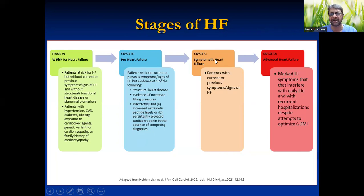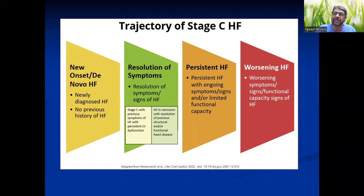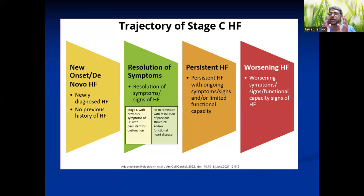C is symptomatic and D is end-stage. Within symptomatic patients, it's very important to determine: is your patient de novo — new onset heart failure? Or has the patient previously had symptoms and presently has resolution of symptoms? You may come across this kind of patient in your OPD. Persistent means in spite of treatment your patient is persistently having symptoms. And the last group is worsening — so gauging your patient's symptoms and hemodynamics is very important.